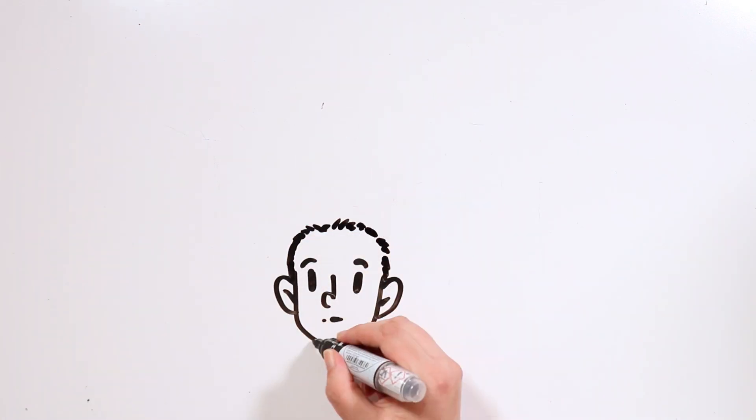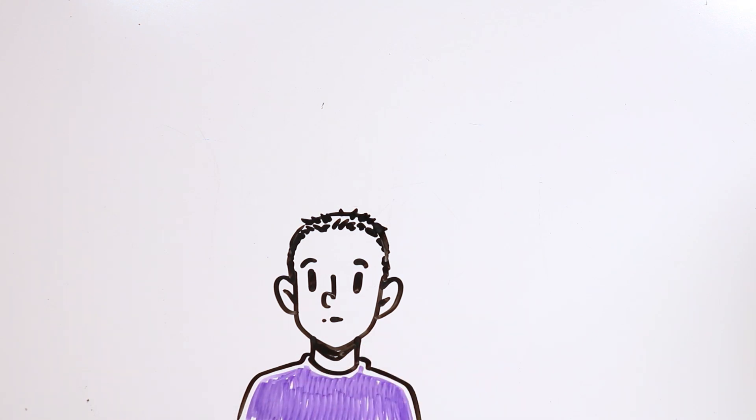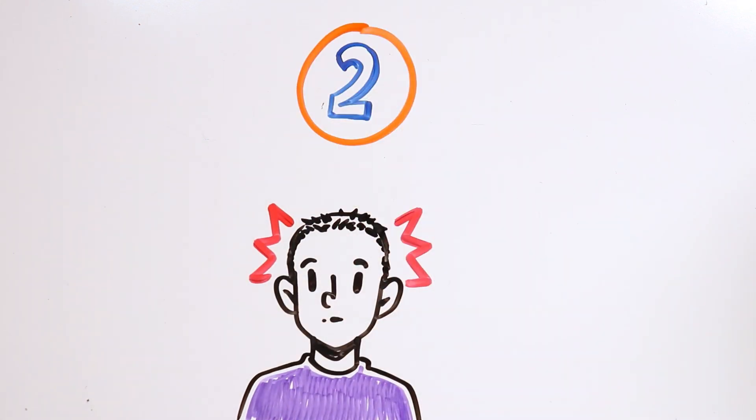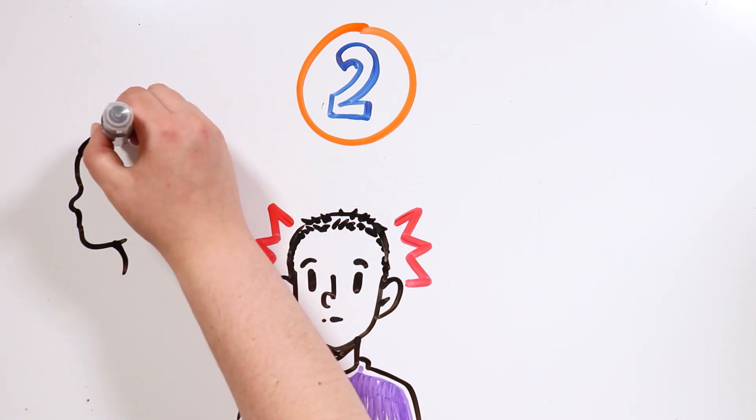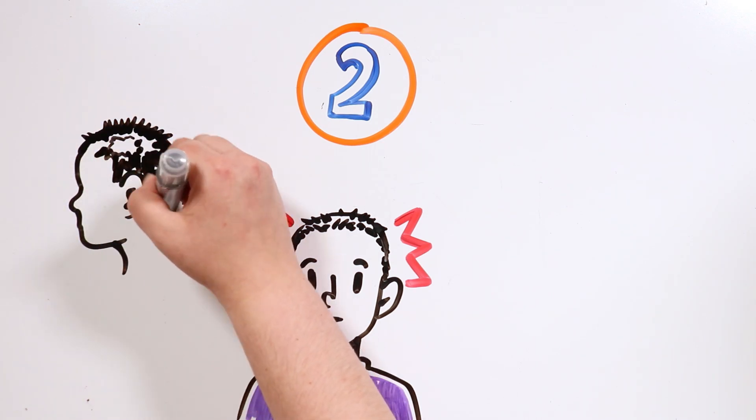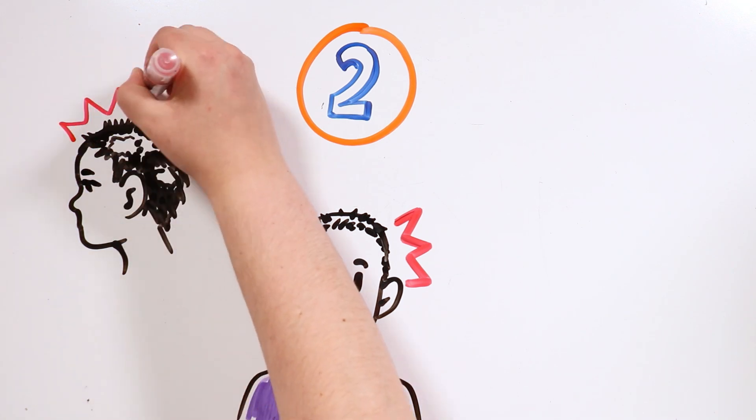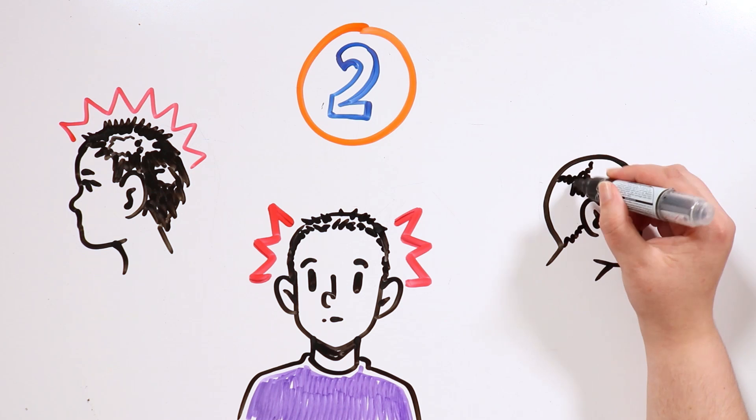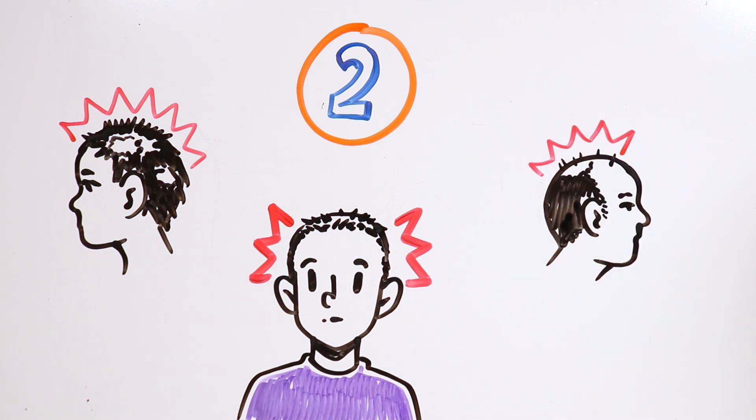Again, there are different types of alopecia, but before naming them, we have to categorize them in two larger groups. On one hand, we have the scarring alopecias, where the hair follicles are completely destroyed, making this condition irreversible. On the other hand, we have the non-scarring alopecias, which are usually reversible.